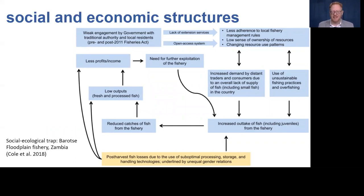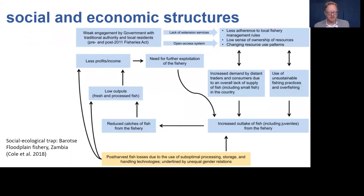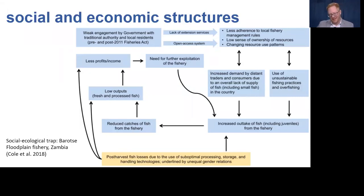Cole and colleagues, applying a social ecological systems approach to the Barotse plain floodplain fishery in Zambia, argue that gender inequality contributes to a maladaptive path dependency they describe as a social ecological trap. The yellow box in this vicious cycle highlights gender inequalities as contributing to suboptimal processing, storage, and handling technologies — that is, inefficient drying and smoking methods — which arguably create low outputs and low income that lead to increased fishing and in turn reduce fish stock, creating a cycle of ongoing decline in productivity.